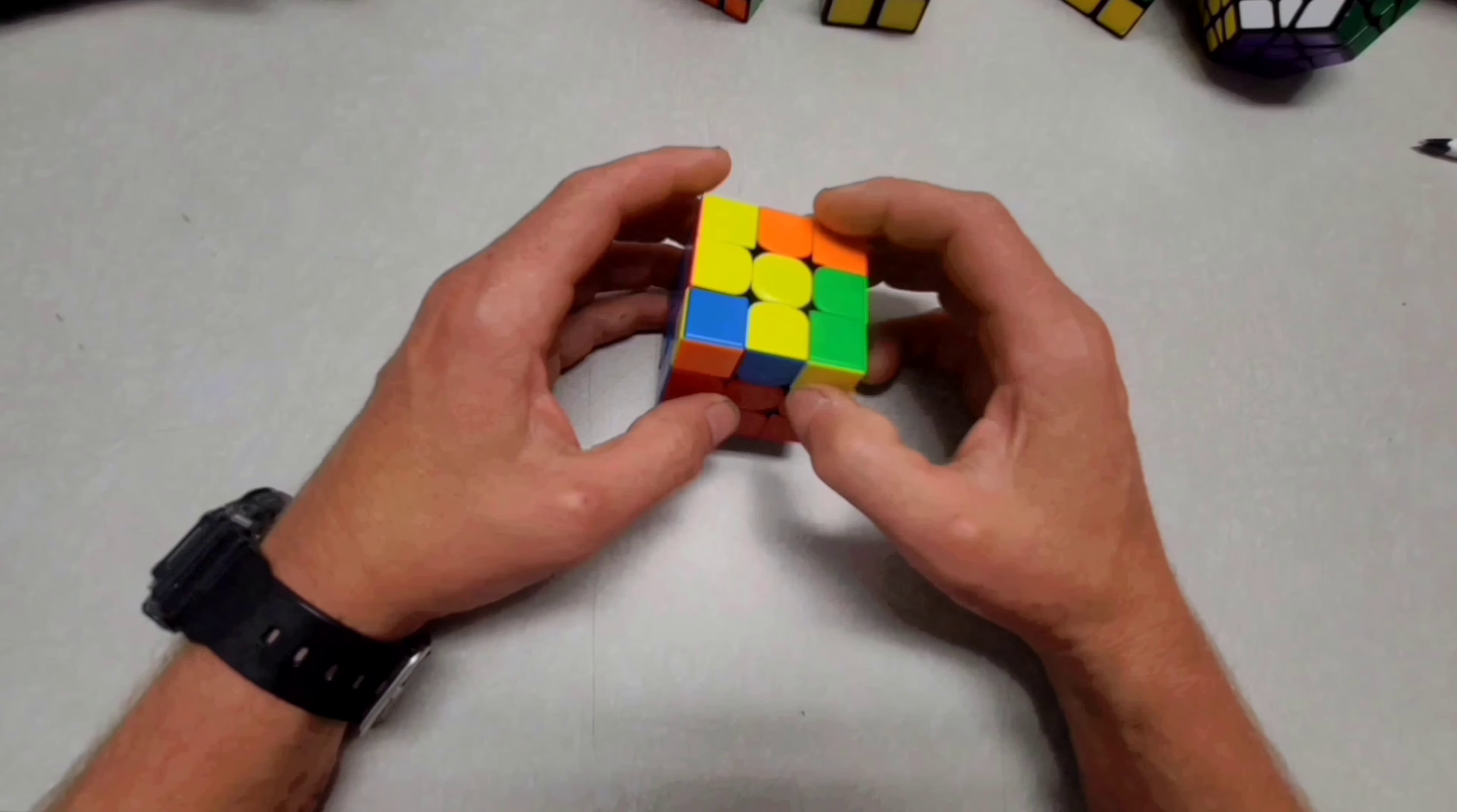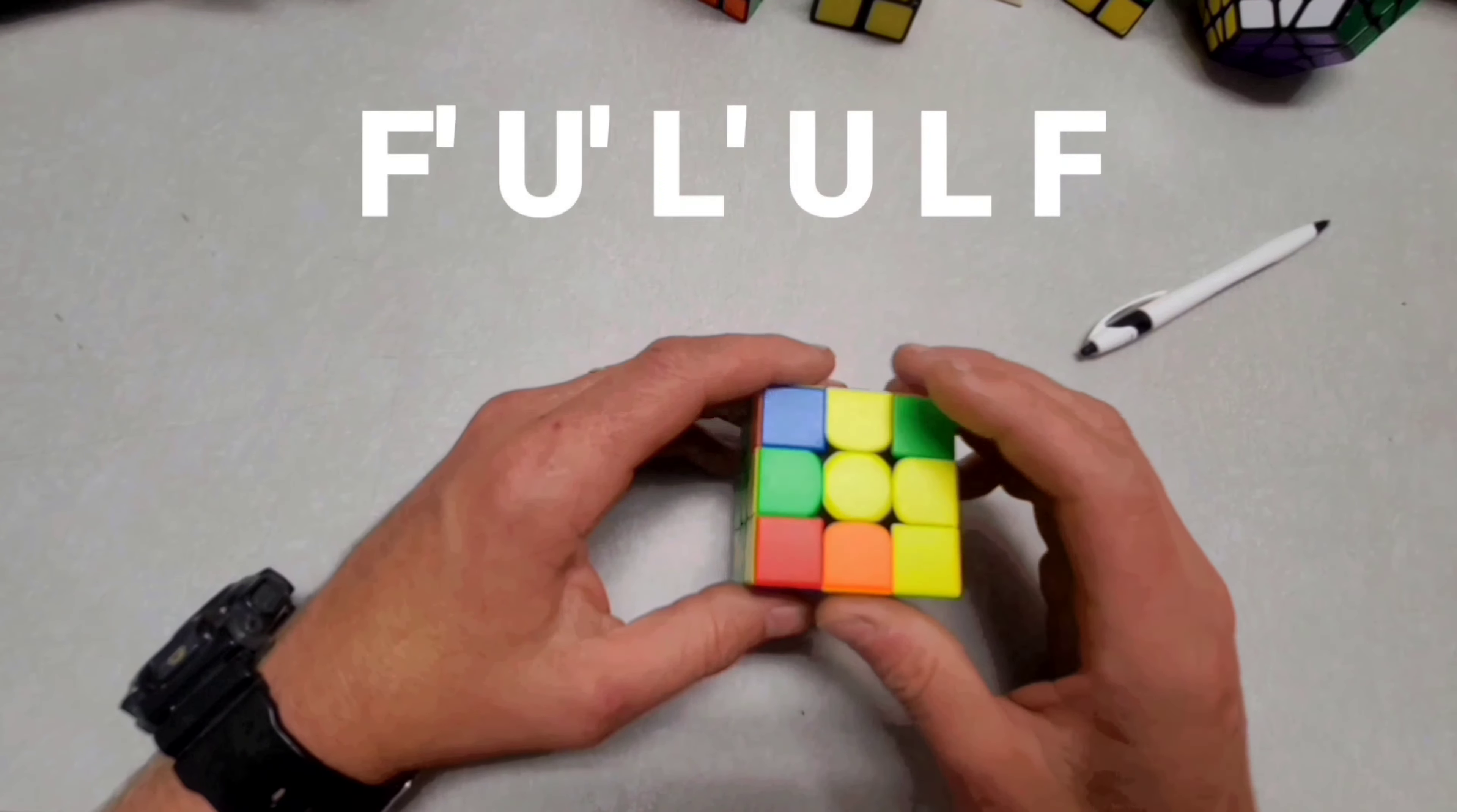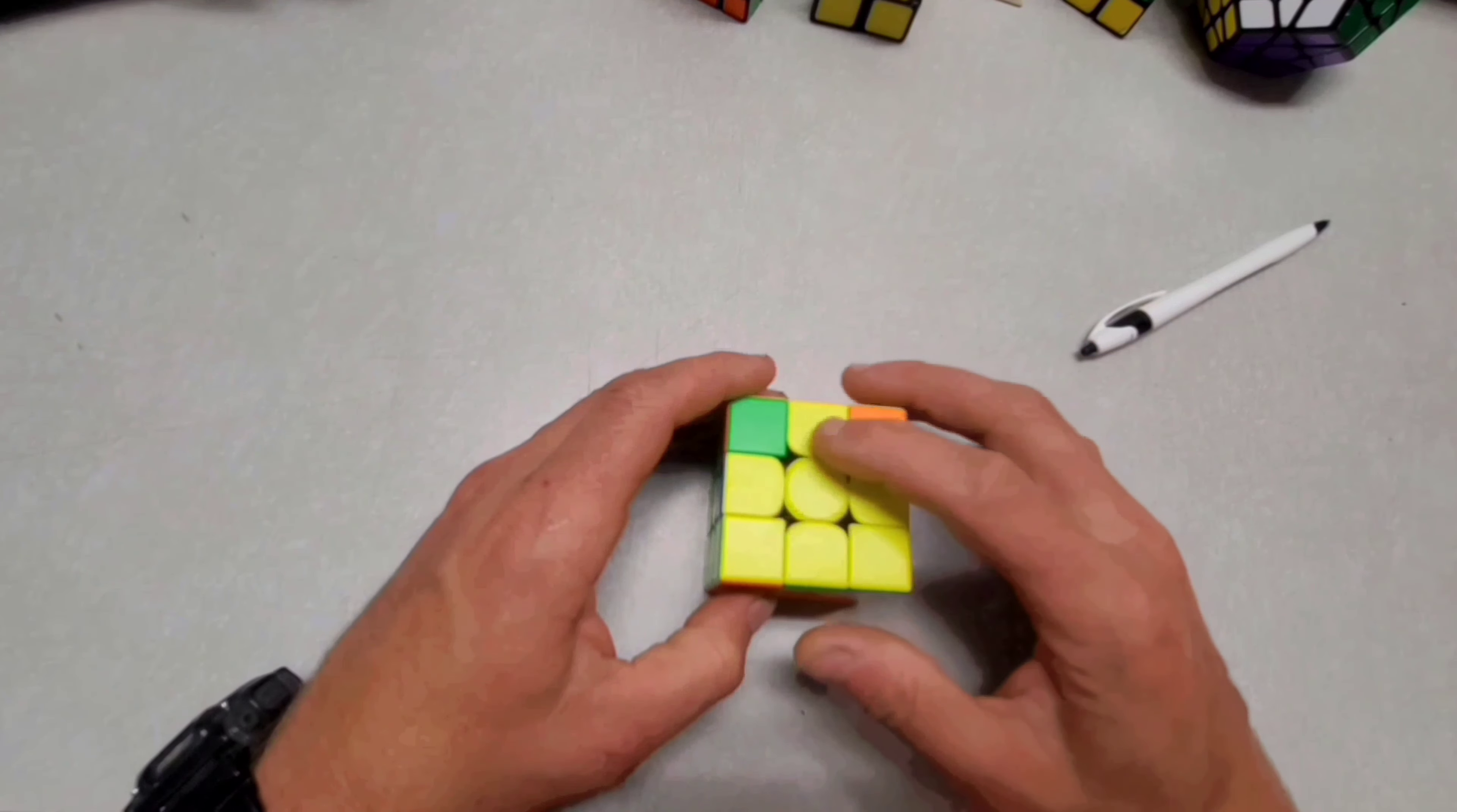And now we're ready to get the cross on the top. So what I like to do is look for an L. This is this L right here. So you put the L just like this in this position. When you do that, you do this algorithm. And it's to get your cross at the top. So what it's going to do is, it's going to be front prime, up prime, L prime, then it's U, L, F. See how I got the cross? That's what you want.